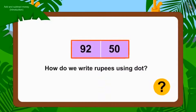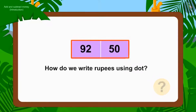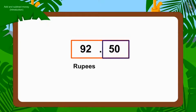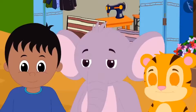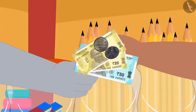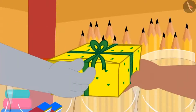How do we write this using a dot for rupees? To the left of the point we will write the number of rupees, and to the right we place paise. The three together paid the price of the hat and pencil and bought the gift.